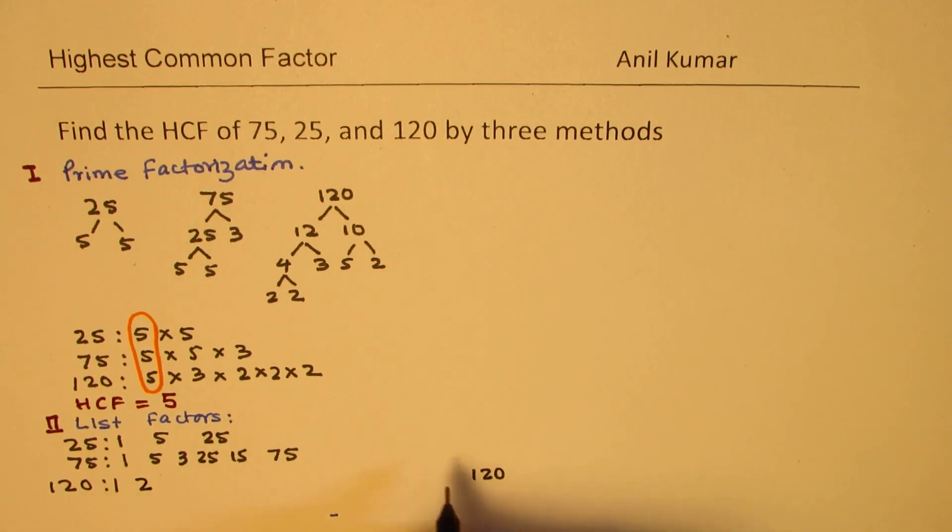So, we have 2 times 60, 3 times 40, 4 times 30, 5 times, 5 times 2 is 10 and then 20 is 24 and then we have 6 times 20.